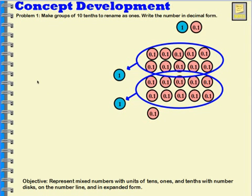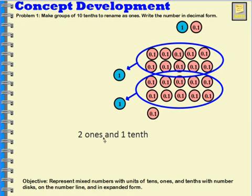And since I have 20, I can do the same thing with this group — 10 one-tenth pieces grouped together, represented with one disk valued at one whole. So what disks do I have now? I have one whole, one whole, and one tenth: two ones and one tenth.